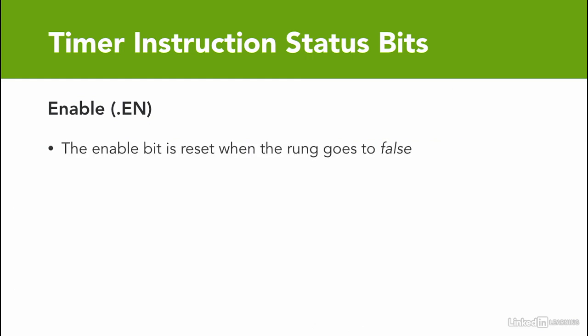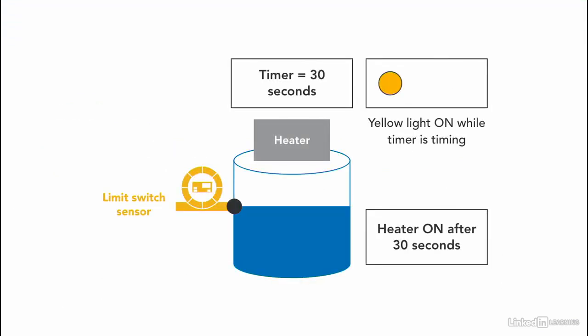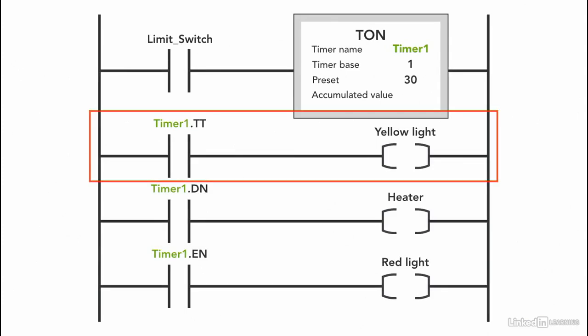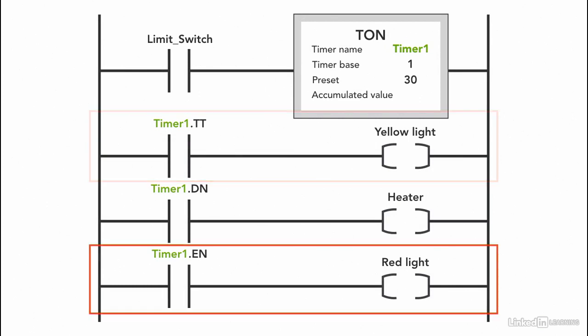The enable bit resets or goes false when the rung goes false. Using the same example, we have a red light that turns on during the whole process — when the timer is timing for the 30 seconds and when the timer is done — using the timer enable bit as the status bit. So the yellow light is only on while the timer is timing for 30 seconds, while the red light stays on the entire process, even after the timer is done, as long as the rung is true.